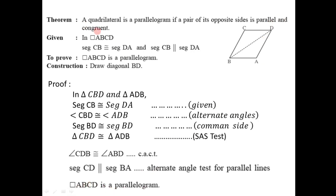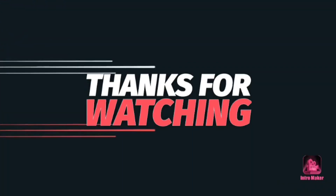That is what was to be proved. A quadrilateral is a parallelogram if a pair of its opposite sides is parallel and congruent. Thank you.